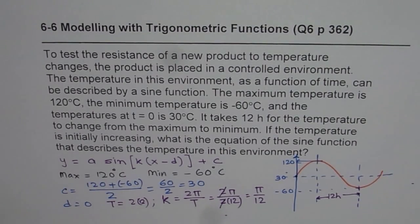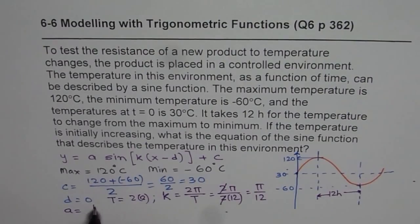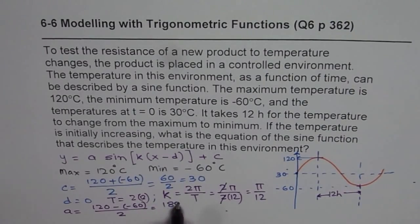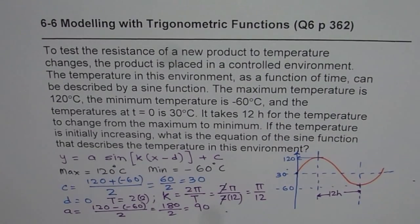A equals 120 minus minus 60 divided by 2, which gives us 180 divided by 2 equals 90. That is the value of A.